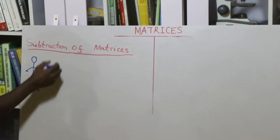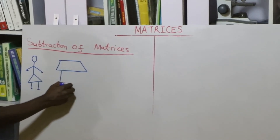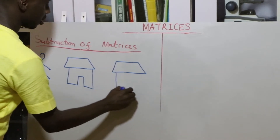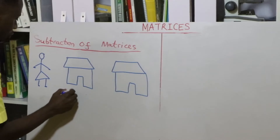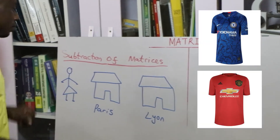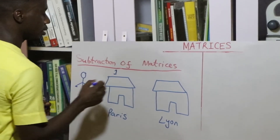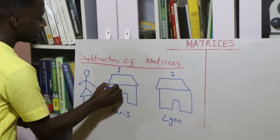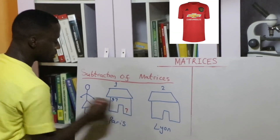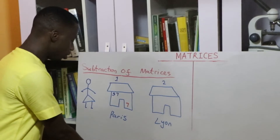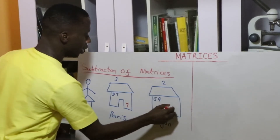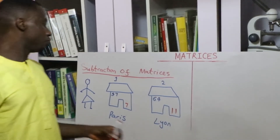You have two stores — one in Paris and one in Leon. So store one is in Paris and store two is in Leon. What do you sell? You also sell jerseys. In store one you have 97 Chelsea jerseys and 7 Manchester United jerseys. Now in your Leon store, let's say you have 64 Chelsea jerseys and 11 Manchester United jerseys.